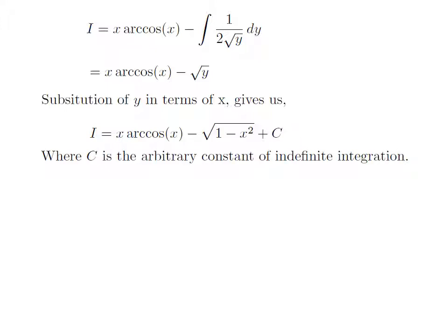We had assumed y is equal to 1 minus x squared. So substituting back, I is equal to x times arccos(x) minus the square root of 1 minus x squared, plus C. This C is the arbitrary constant of indefinite integration — never forget to add this constant at the end of any indefinite integration.